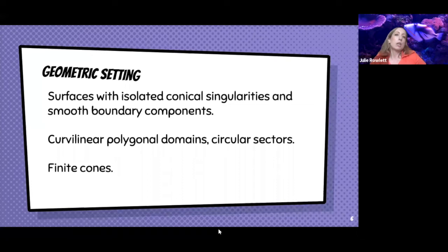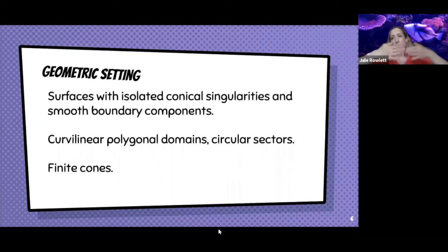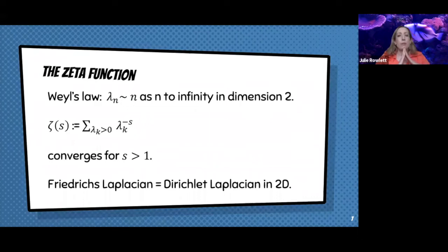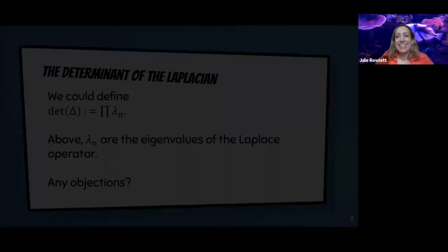I'll define these things more rigorously in a moment, but just to put it in context: we're going to consider surfaces that can have isolated cone points and smooth boundary components, as well as curvilinear polygonal domains — those can have boundaries meeting at a corner, not just isolated singularities. These include circular sectors and finite cones. In all of these geometric settings, the eigenvalues of the Laplacian grow asymptotically like λ_n ~ n, so the naive product clearly doesn't converge.